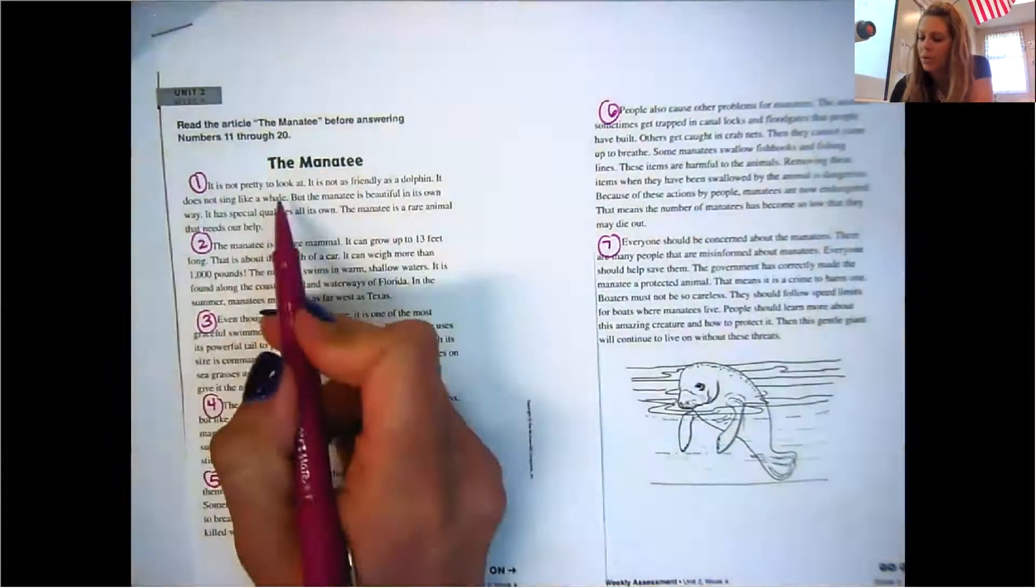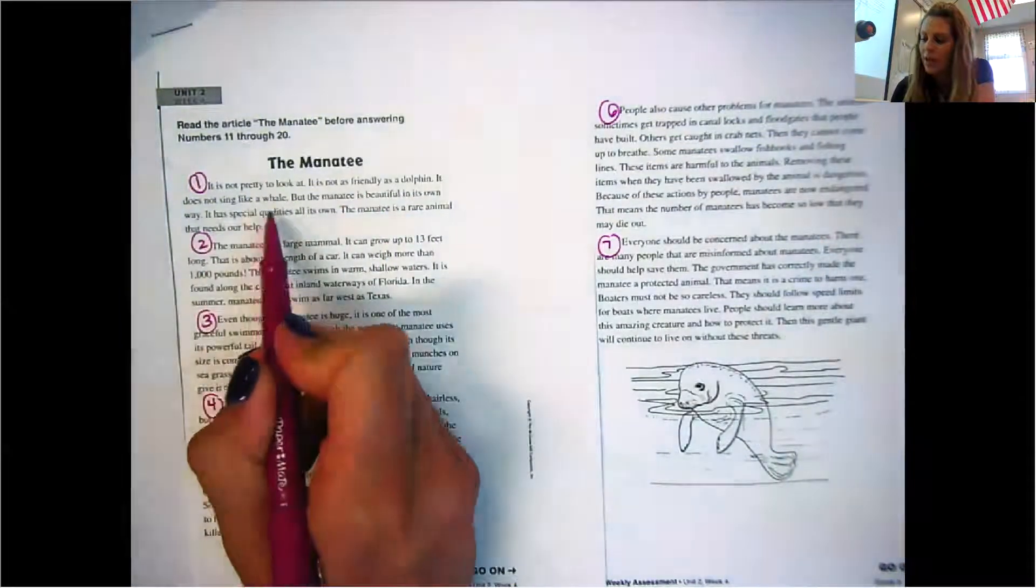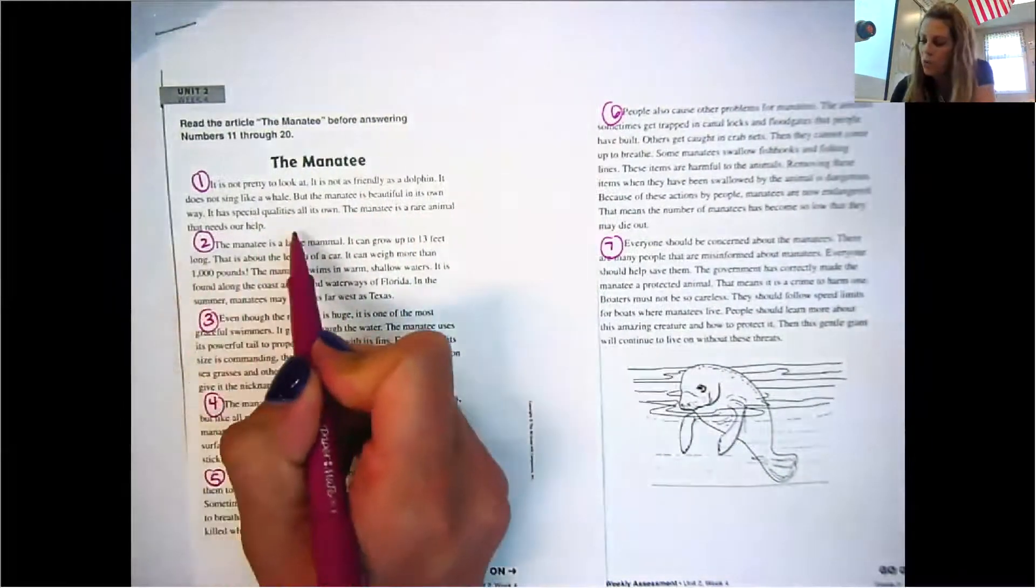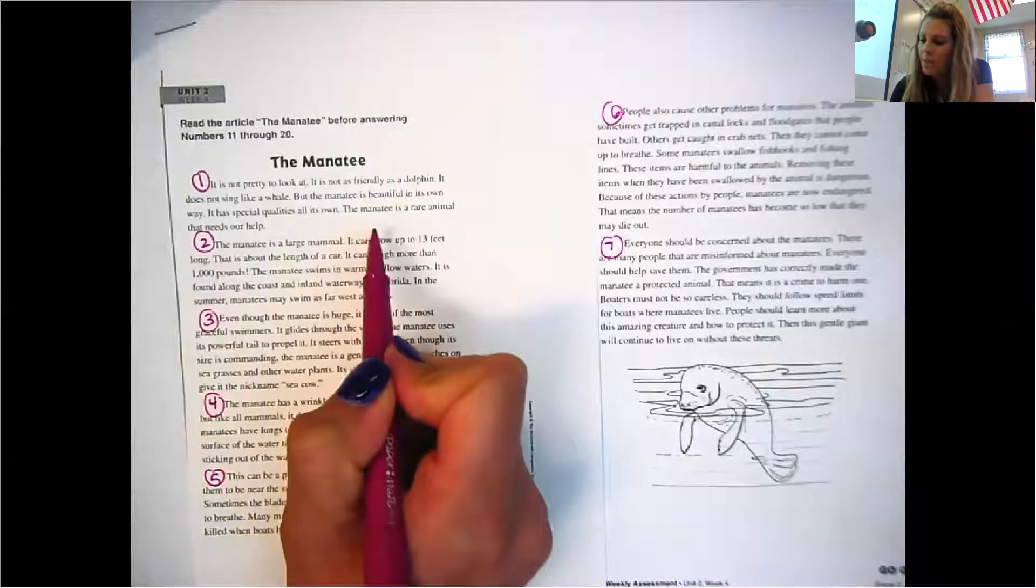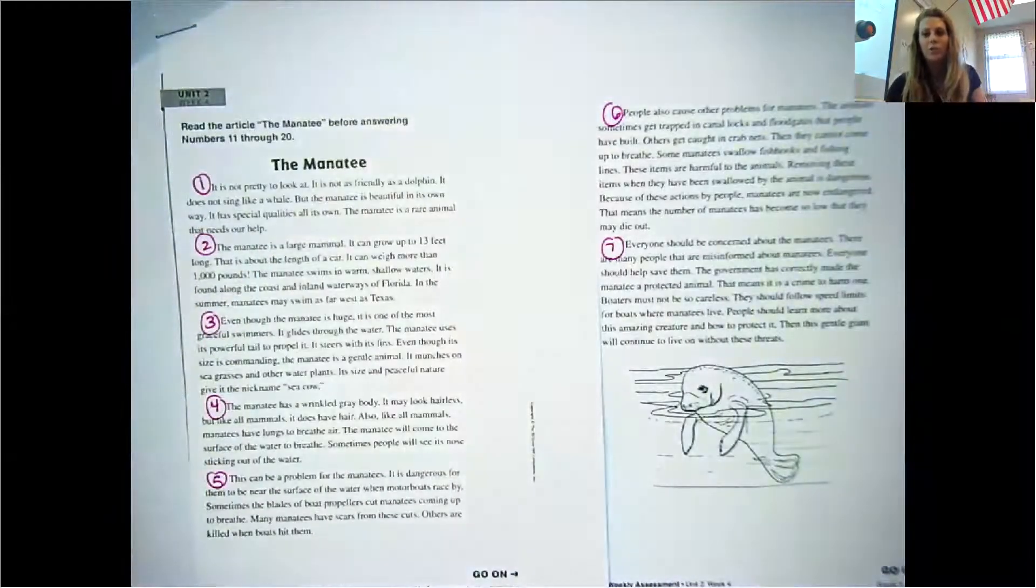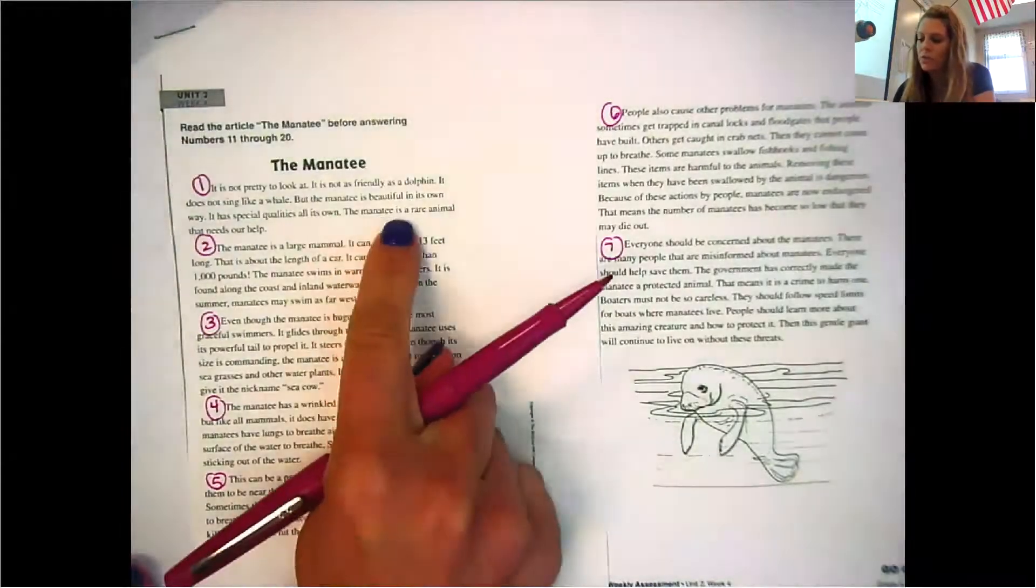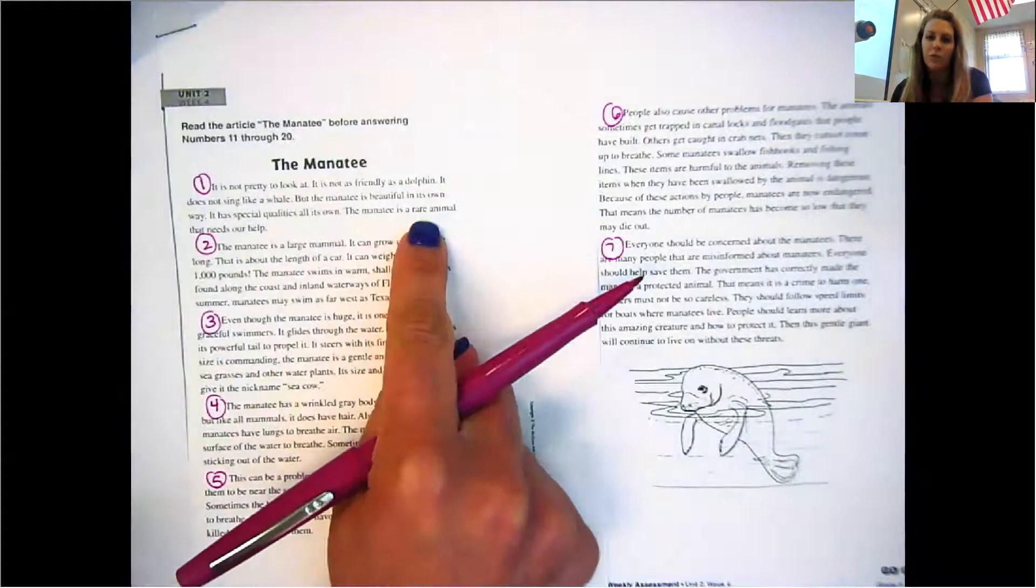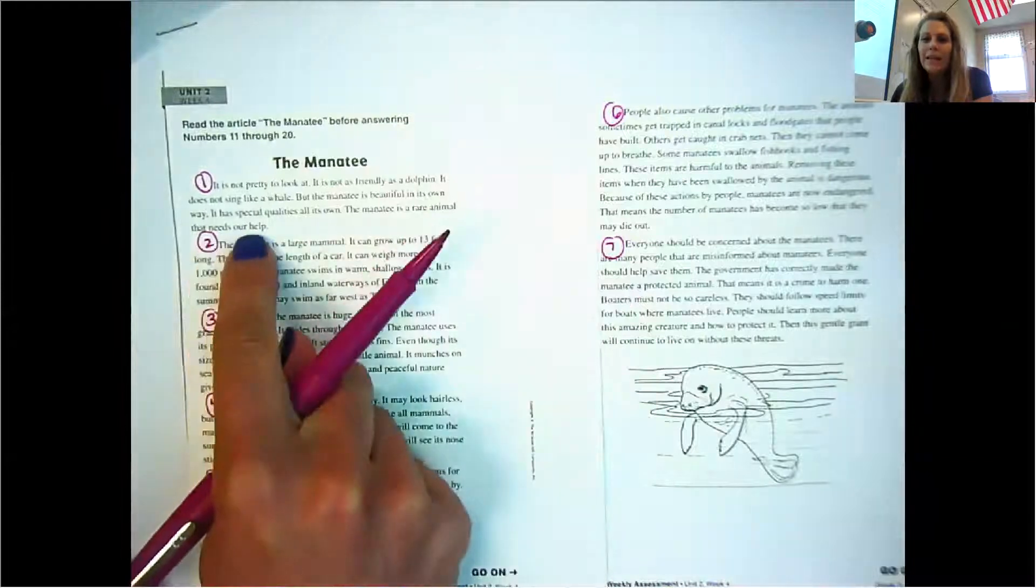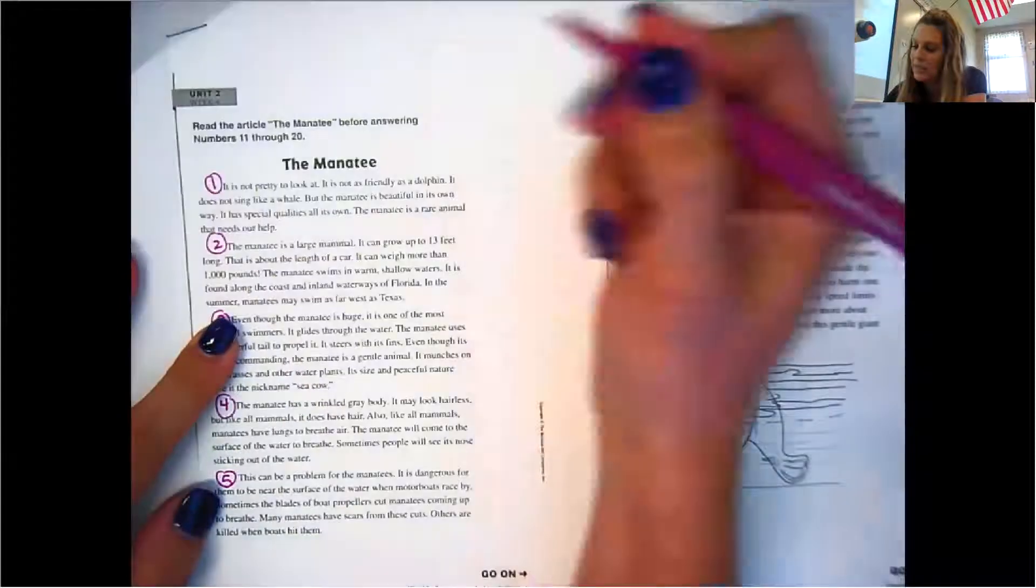It is not pretty to look at. It is not as friendly as a dolphin. It does not sing like a whale, but the manatee is beautiful in its own way. It has special qualities all of its own. The manatee is a rare animal that needs our help. Right there, I know the author's viewpoint. I know how the author feels about manatees. The author feels that manatees are rare, which means they're different or not seen a lot, and they need our help. So I'm going to write manatees need our help.